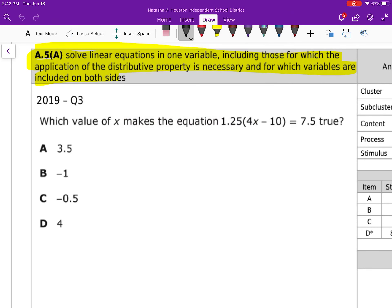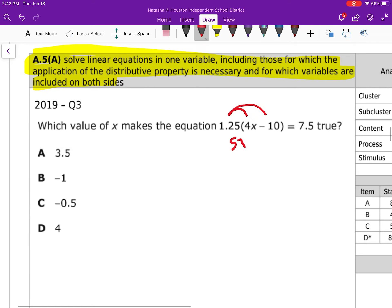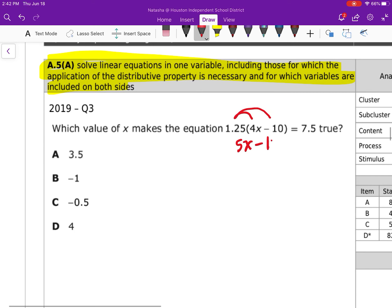I need to distribute that 1.25 to each term. So 1.25, if I put that in my calculator, 1.25 times 4 gives me 5X. 1.25 times 10 gives me minus 12.5. That's equal to 7.5.